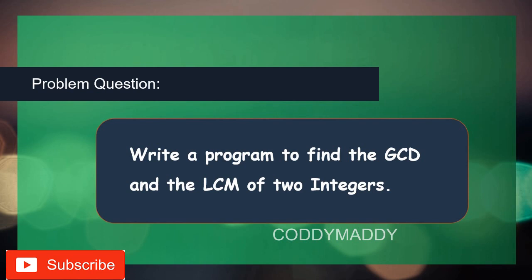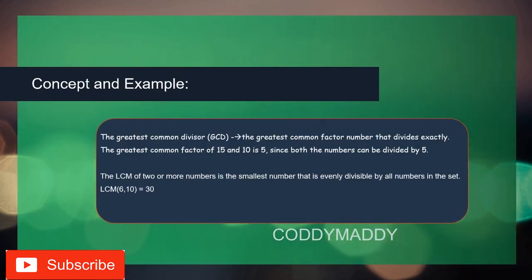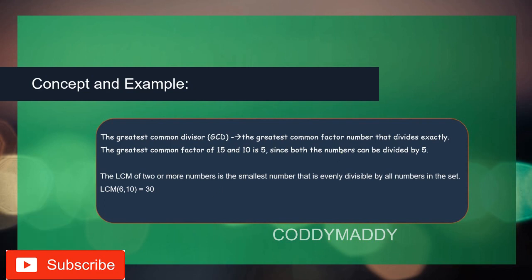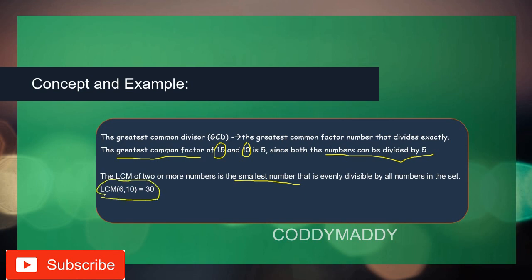GCD, or HCF, is the greatest common factor that divides both numbers exactly — meaning the remainder should be zero — and it should be the highest such number. For example, the GCD of 15 and 10 is 5, because 5×2=10 and 5×3=15, and no number greater than 5 divides both exactly. LCM of two or more numbers is the smallest number evenly divisible by all numbers in the set — for example, the LCM of 6 and 10 is 30.